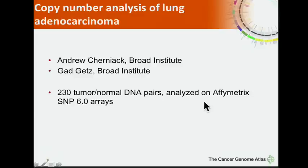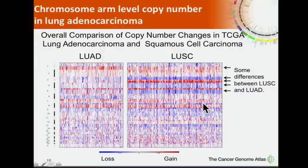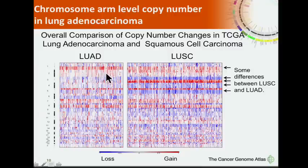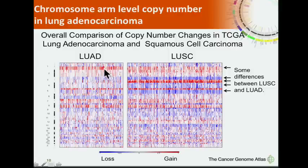I want to speak about copy number analysis of lung adenocarcinoma, led by Andy Cherniak and Gaddy Getz as part of the Broad Institute Genome Characterization Centers. Here, red is copy number gain, blue is copy number loss, and white is neutral. You can see many overall similarities between lung squamous carcinomas and lung adenocarcinomas: gain of chromosome arm 1q, gain of 7, loss of 8p, gain of 8q, loss of 9.